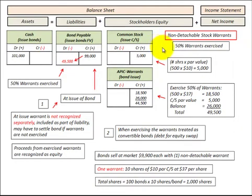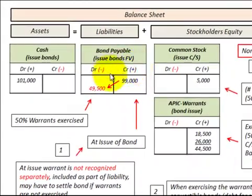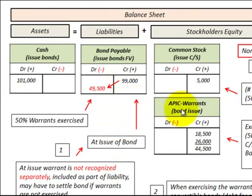Let's look at non-detachable stock warrants when they're exercised. These warrants are attached to the debt security — the bond — and can't be separated from it. At exercise, we reduce the bond amount by a specified amount depending on what the exercise terms were on those warrants, and we perform a debt-to-equity swap. Any proceeds from those warrants are recognized as equity, either through common stock and additional paid-in capital. We don't recognize any cash proceeds — we just recognize a debt-to-equity swap on these non-detachable stock warrants.